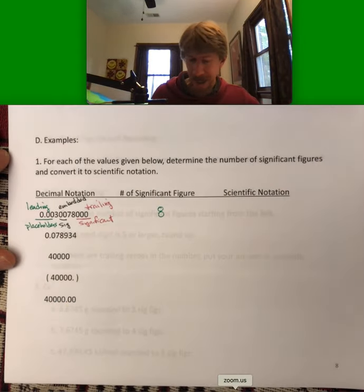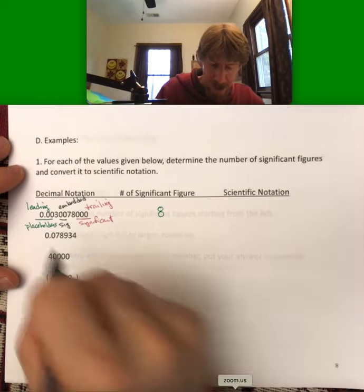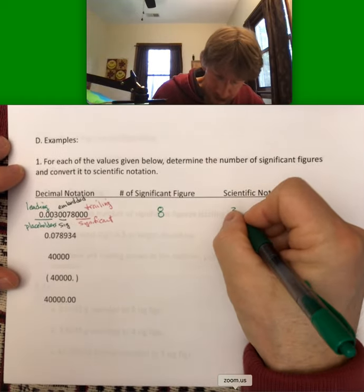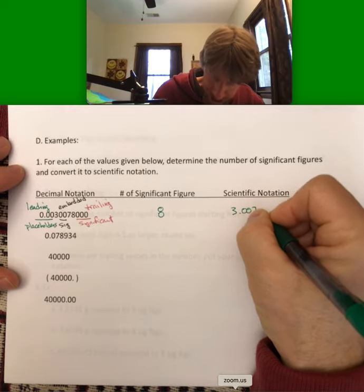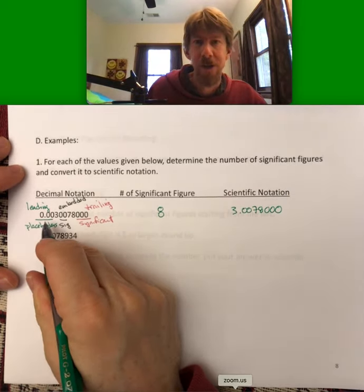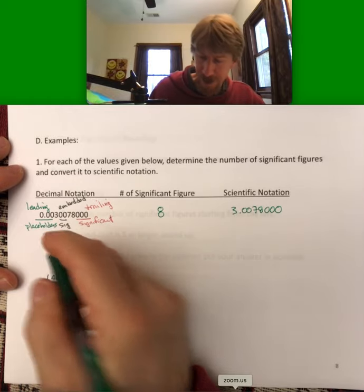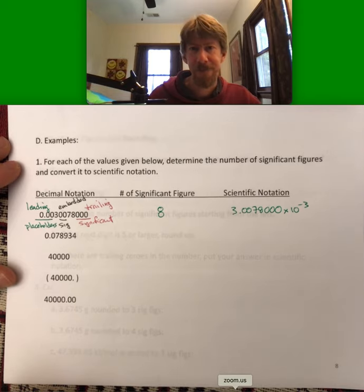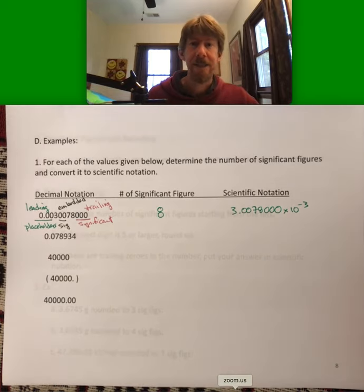So the number of significant figures is going to be one, two, three, four, five, six, seven, eight significant figures. And in scientific notation, we'll put the decimal place right next to the three: 3.0078000, and it's a small number and we move the decimal place three places, times ten to minus three. Step by step, we will get practice on this—you will be able to do this, and that's our goal.